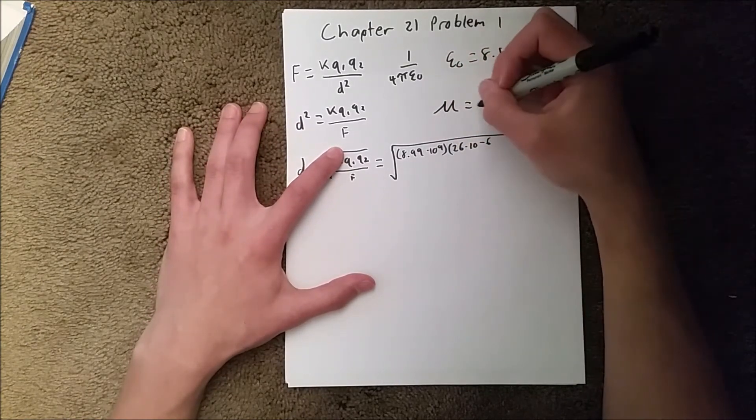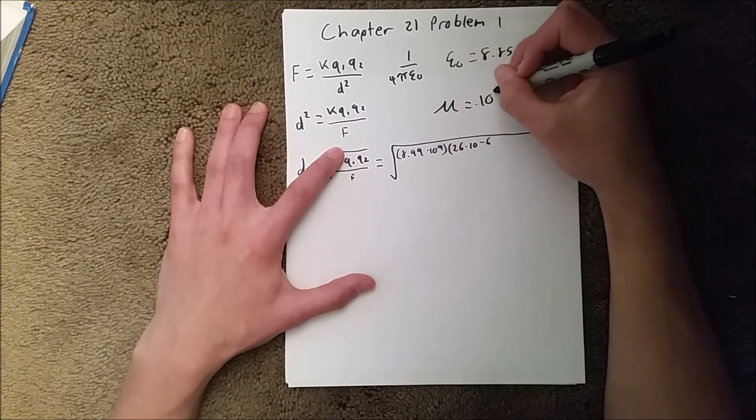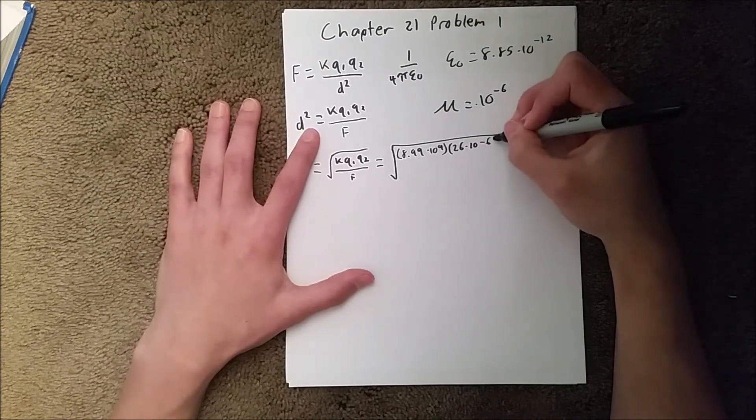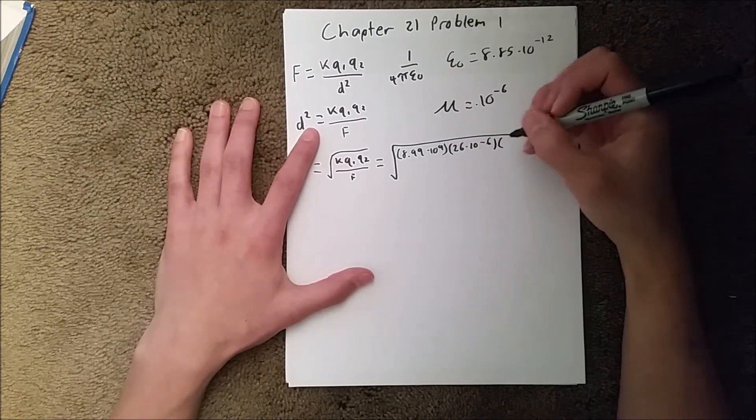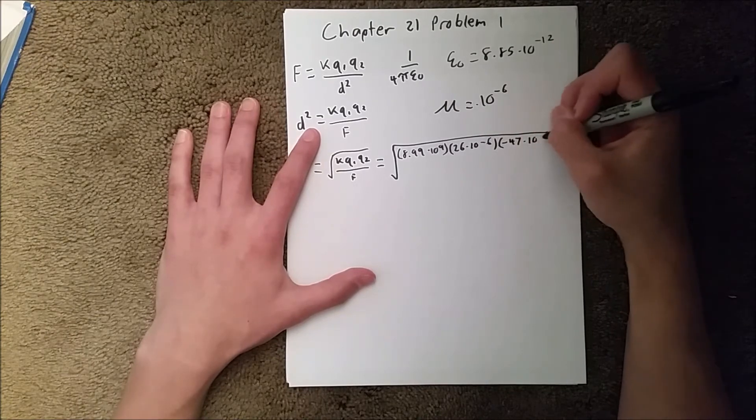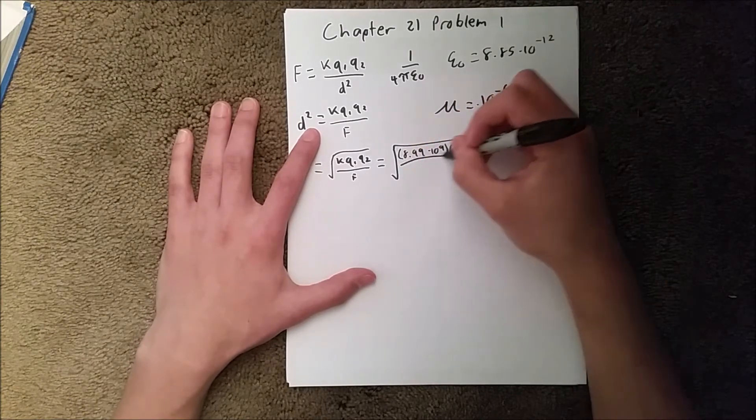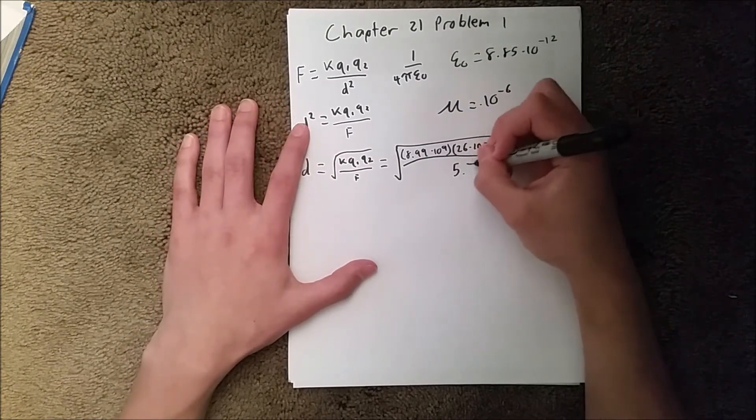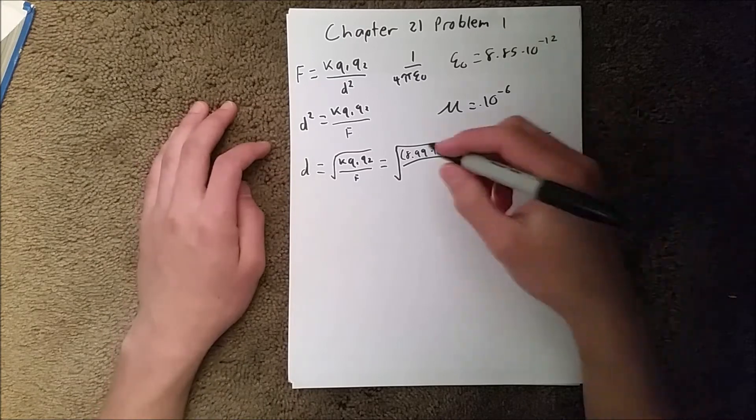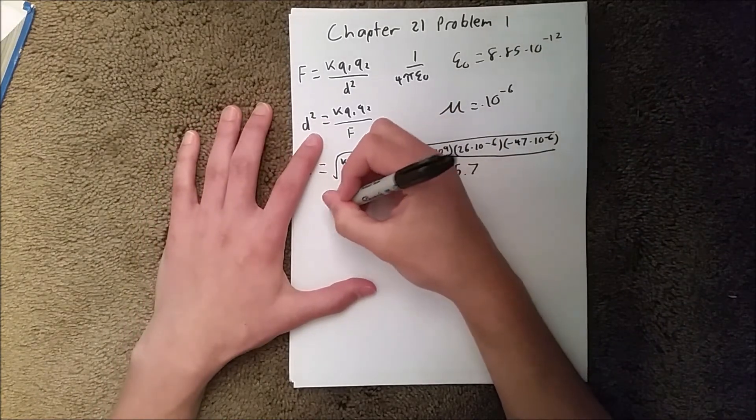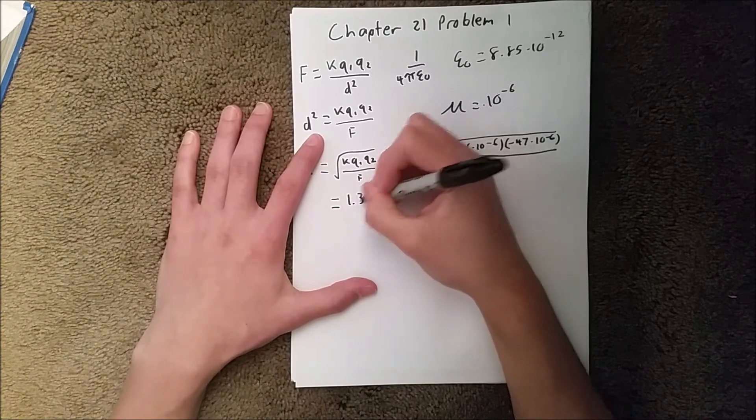Whenever you see micro or the symbol mu which means micro, it's going to be times 10 to the negative 6th, so whatever value it is. Our last one is negative 47 microCoulombs, so we'll write negative 47 times 10 to the negative 6th. And that's all over our force which we were given to be 5.7 Newtons. And when you plug that into your calculator you should get a distance of 1.39 meters.